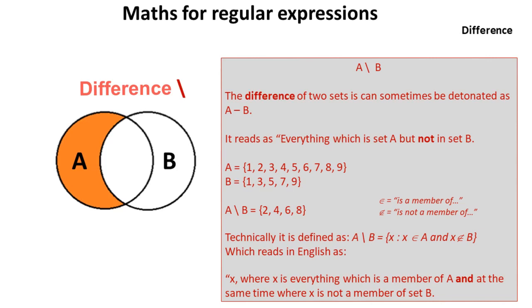Technically, we define it like this, where E means is a member of, and this means E is not a member of, and that reads as X, where X is everything which is a member of A, and at the same time, where X is not a member of B. But it's sufficient to remember this shorthand for the exam.